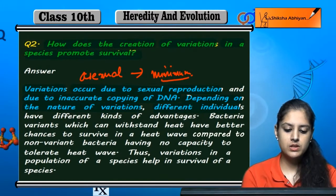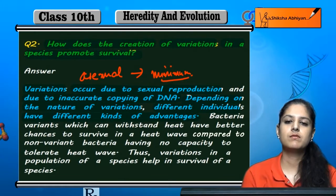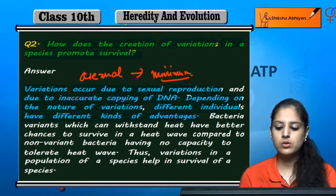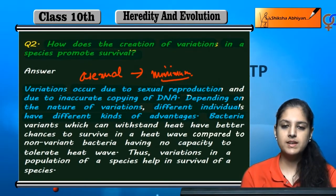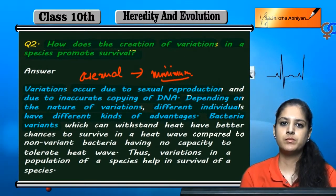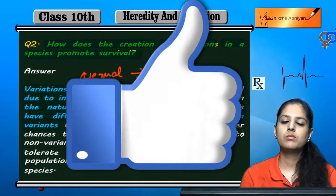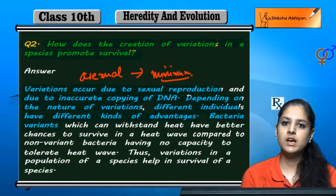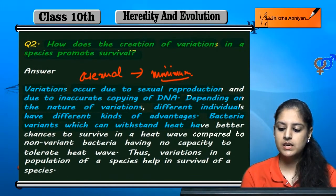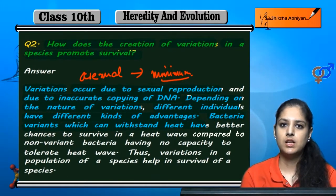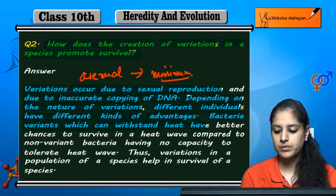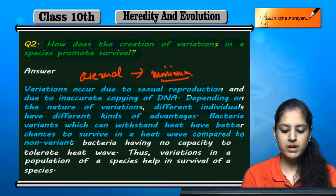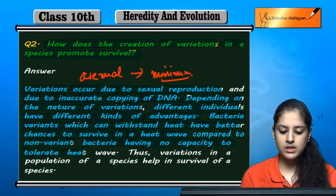Different individuals have different kinds of advantages because their variations differ, so their positive effects vary from individual to individual. For example, with bacteria — some bacteria can withstand heat, so they have better chances to survive in a heat wave, while non-variant bacteria have no capacity to tolerate heat waves.